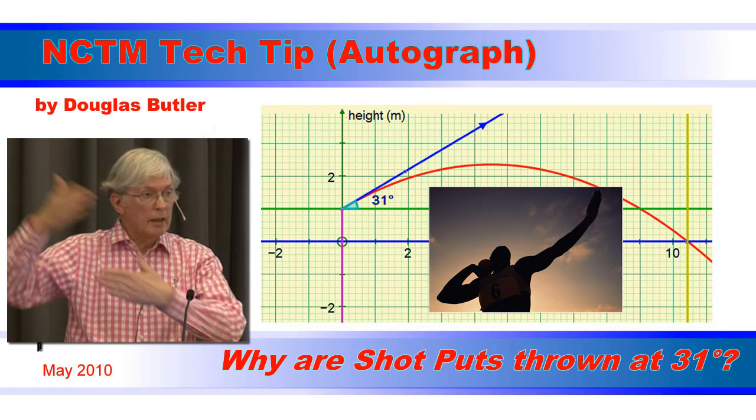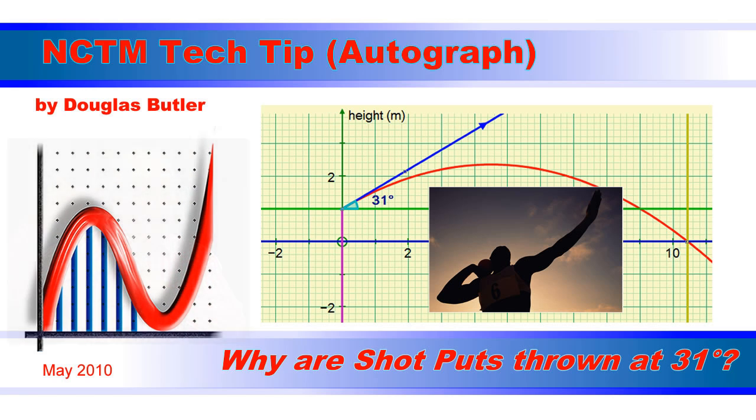Greetings from England to all NCTM readers. Over the years, I have spent many a happy mechanics lesson explaining that 45 degrees is the best angle to throw a cricket ball if you want it to go the furthest.